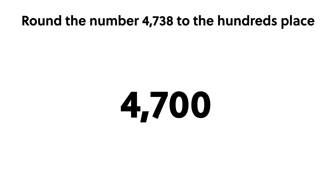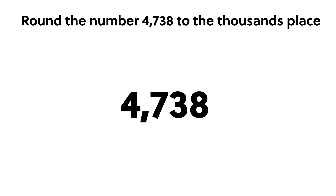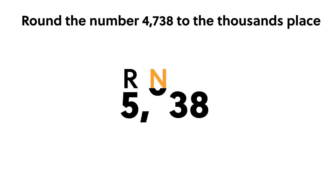Now, suppose we want to round the number 4,738 to the thousands place — rounding to the nearest thousand. The 4 is now in the rounding place. There are no more significant places, so we decide what to do with the rounding digit 4. We look at the next digit, the 7. Since 7 is greater than or equal to 5, we round the 4 up by increasing it to 5. Then we zero out the 7, 3, and 8. So rounding 4,738 to the nearest thousand gives us 5,000.